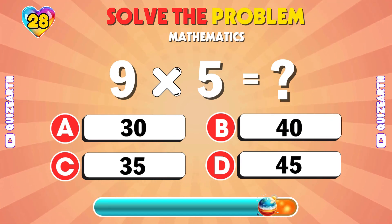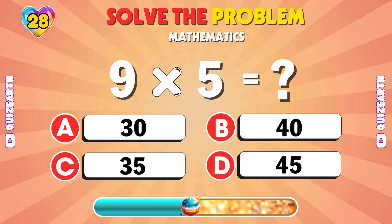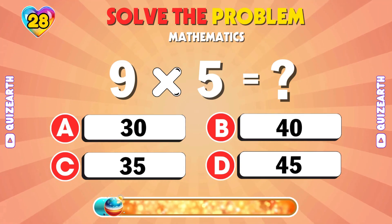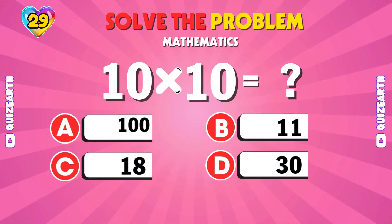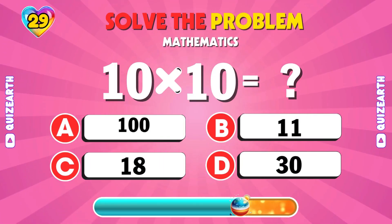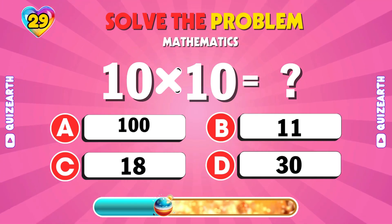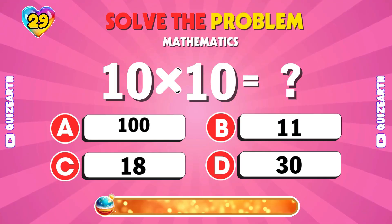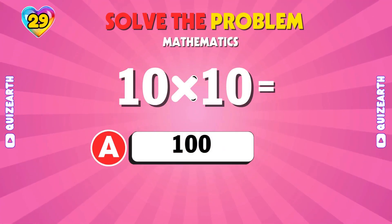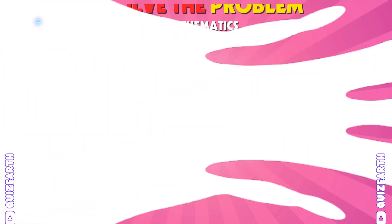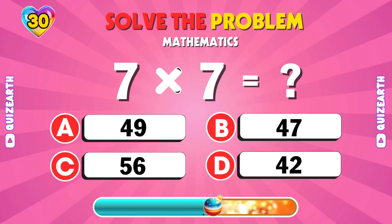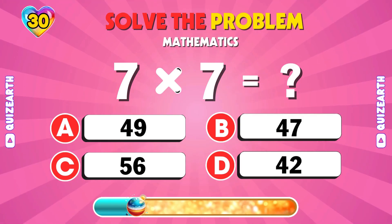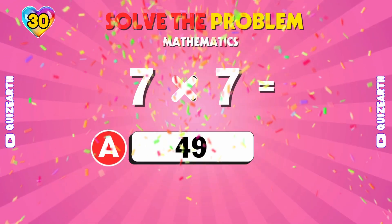What's 9 times 5? That's 45. Okay, 10 times 10. Here it is, 100. Crunch this one, 7 times 7. 49.